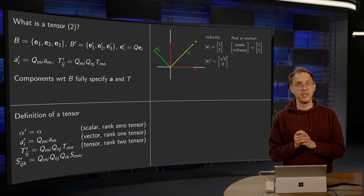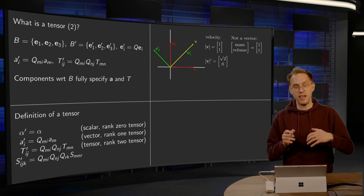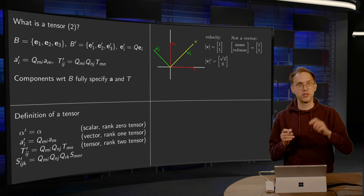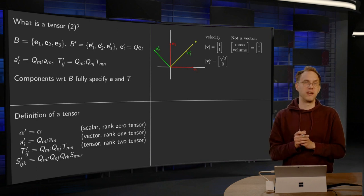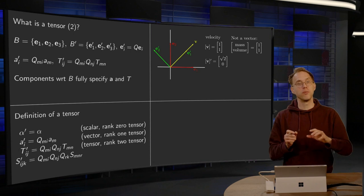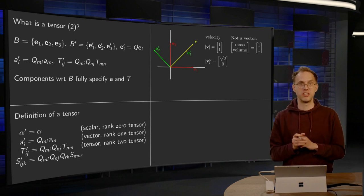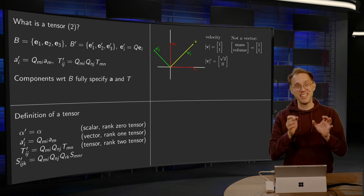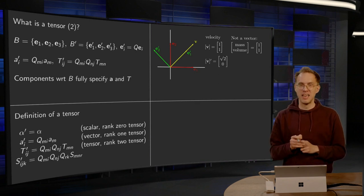So in this case, this velocity is a vector, just the numbers of components are slightly different depending on the choice of basis. But velocity transforms using an orthogonal tensor in this way. So that is why velocity is, in fact, a vector.